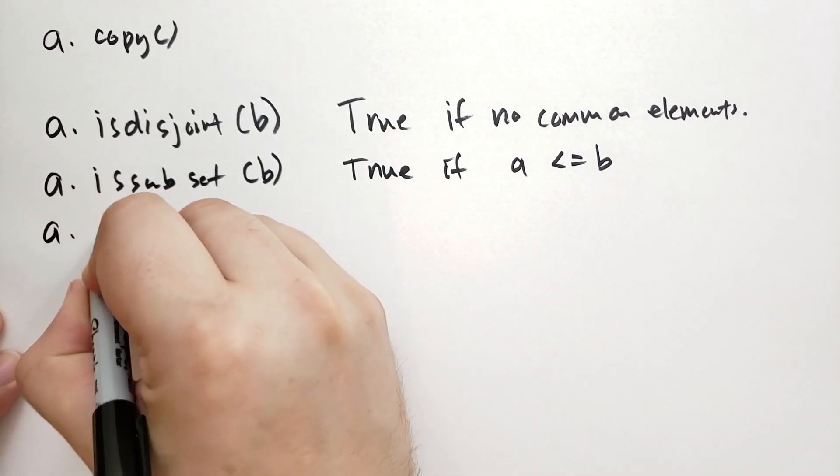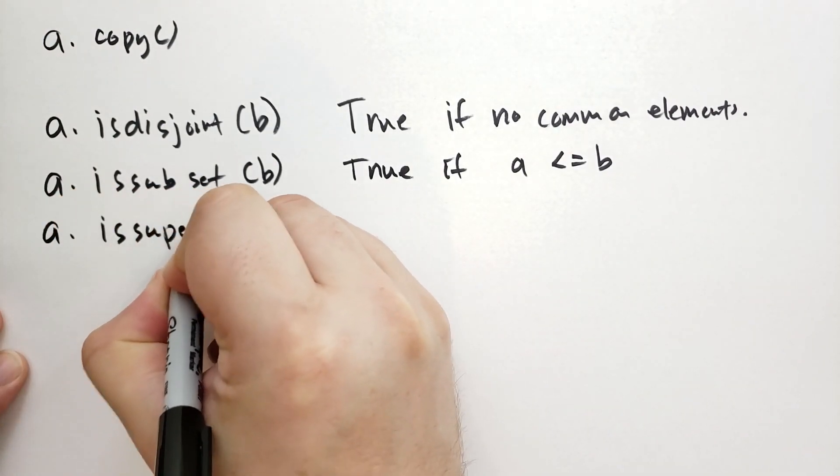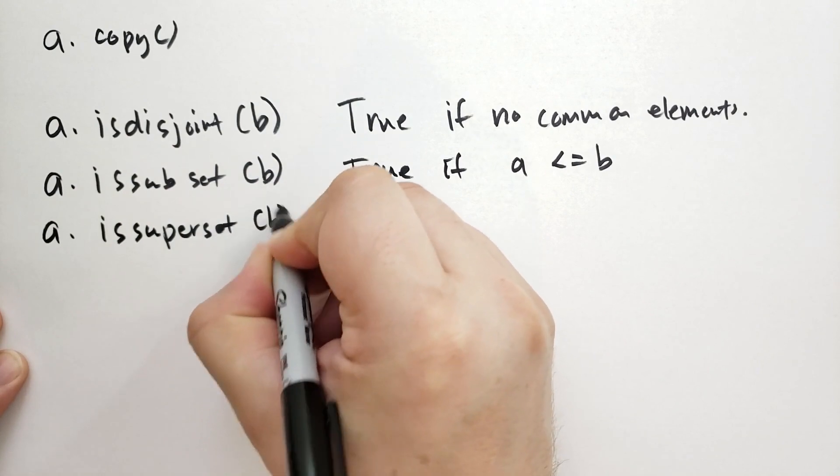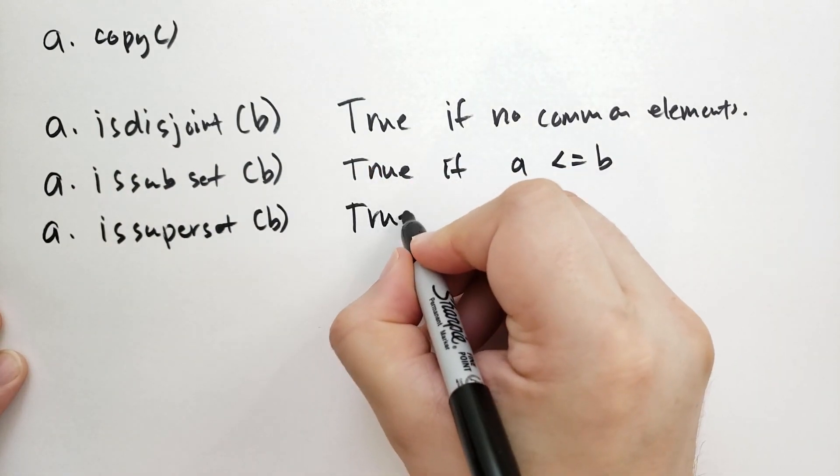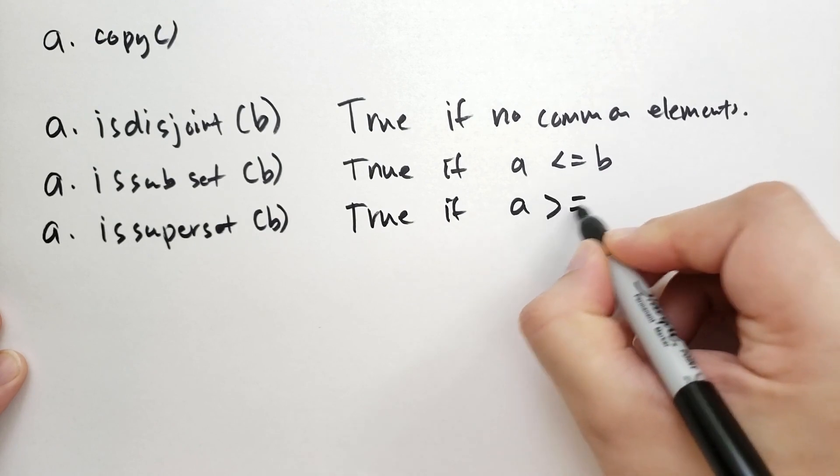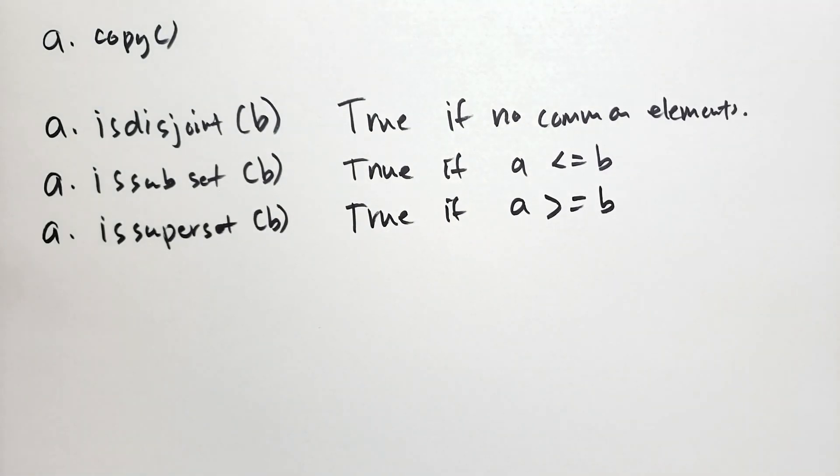And then we also have A dot is superset. And this will be true if A is greater than or equal to B. OK, same thing except B is the elements. B's elements must all be in A.